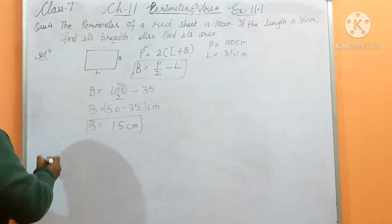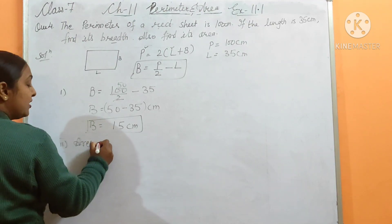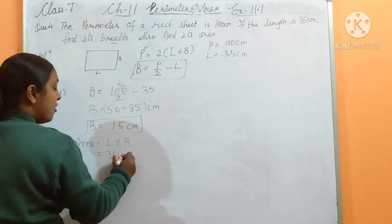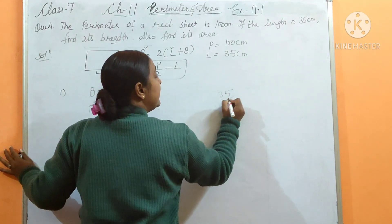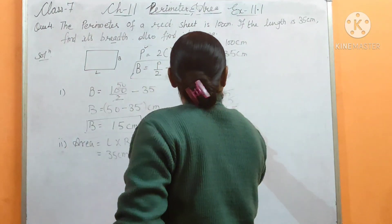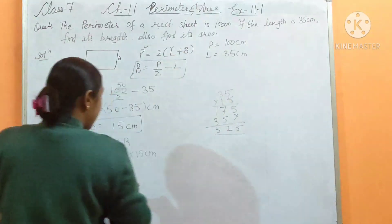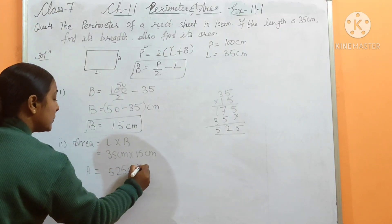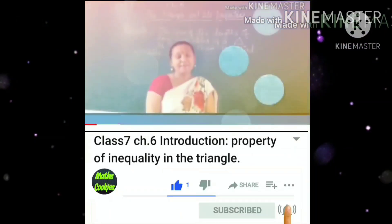Now I need to find the area. This was the first part. For the second part, area equals length into breadth. Length is given as 35 cm and breadth we just found is 15 cm. Multiply 35 and 15: 5 times 5 is 25, and 70, multiply 5 and 3. This gives us 525. The area is 525 cm square. This is the answer of question number 4.